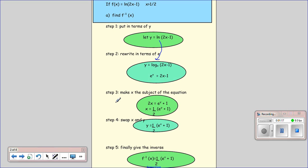So the next step, we want to make x the subject of the equation, so it's just a bit of rearranging. We're going to add 1 to both sides and divide by 2, and so we get this.